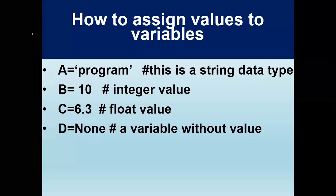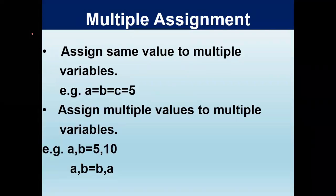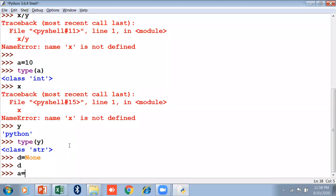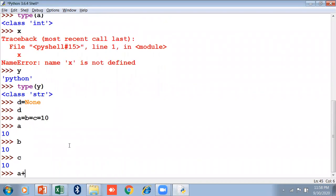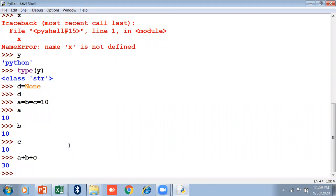Next is multiple assignment. If you want to assign the same value to multiple variables, you can use a equals to b equals to c equals to 5, meaning a, b, and c are all 5. For example, a equals to b equals to c equals to 10 — so a is 10, b is 10, c is 10 — and a plus b plus c will show 30, a common value across three different variables.